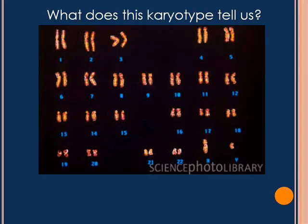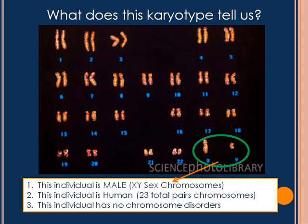Here's another karyotype — think about what this karyotype tells us. You should have figured out that this individual is female, that this individual is human, and that this individual has no chromosome disorders.